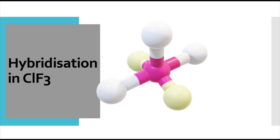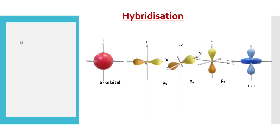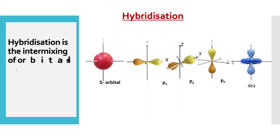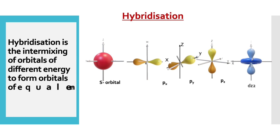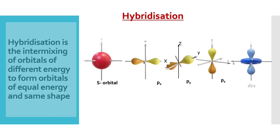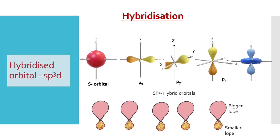Welcome to Aurora Chemistry for Everyone. Hybridization is the process of intermixing of orbitals of slightly different energy so as to form orbitals of equivalent energy and same shape.